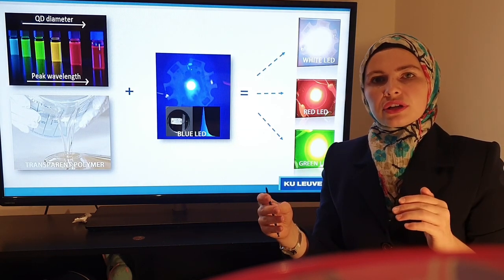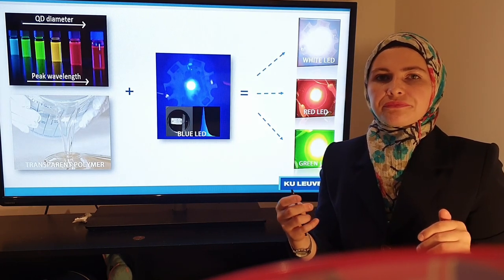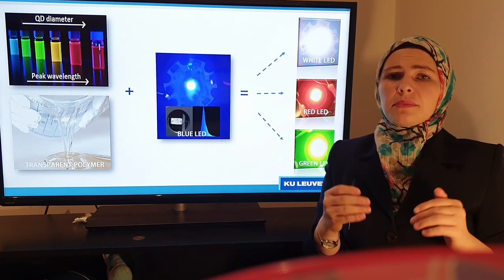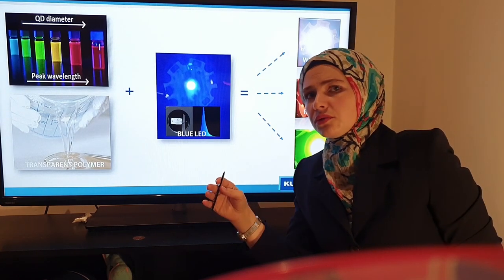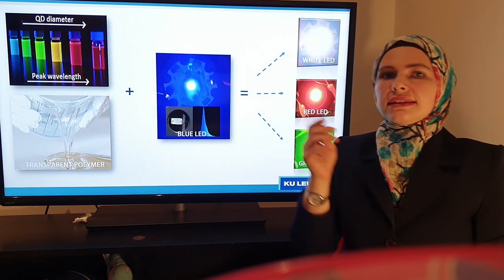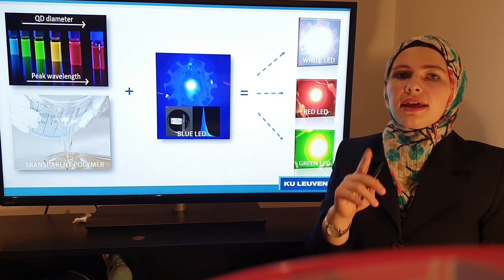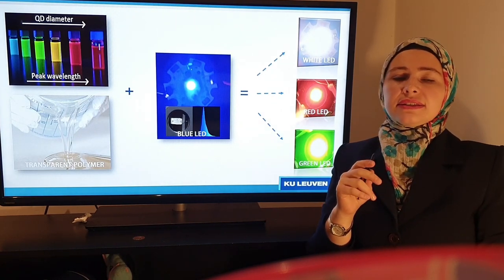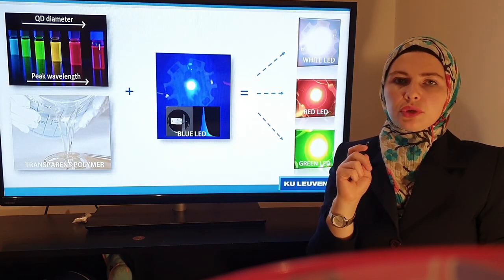So for example, smaller quantum dots will emit green while larger quantum dots will emit red light. This means that by controlling only quantum dot synthesis, their chemical composition is always the same and only the number of atoms changes, we can get particles that emit any color from the spectrum. And this is important in LED industry because it allows us to tailor the spectrum of an LED however we want.